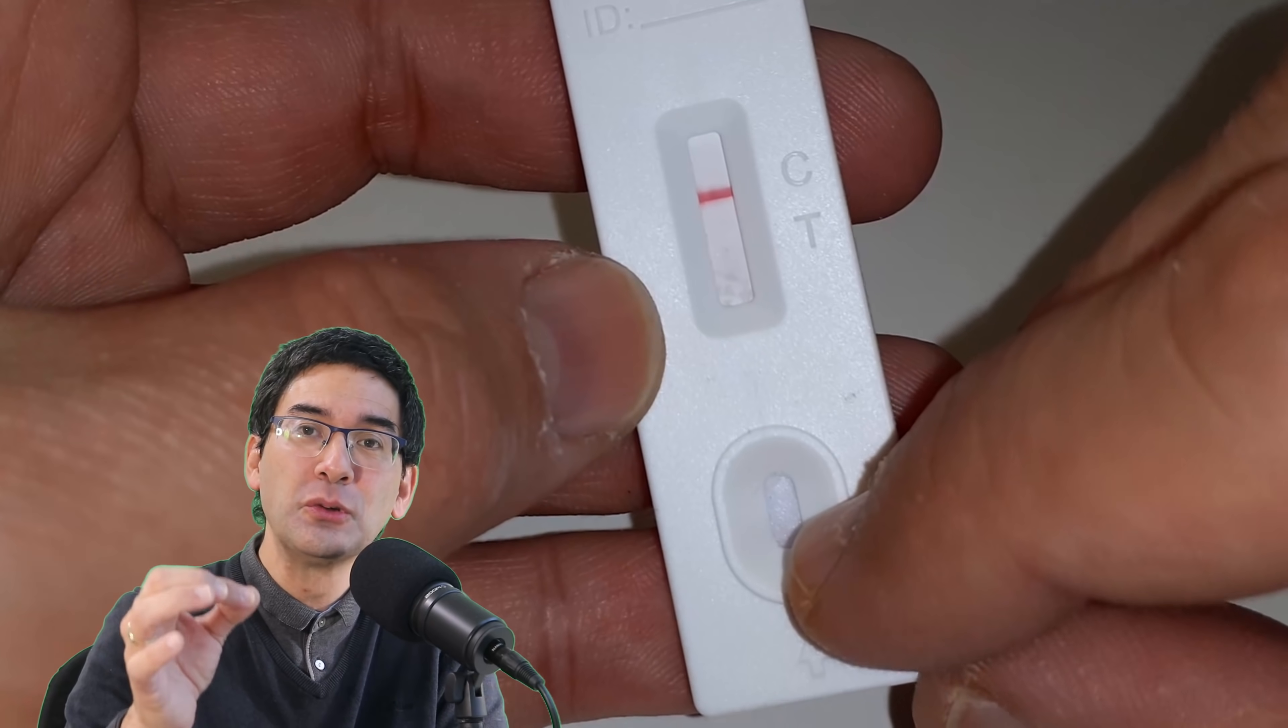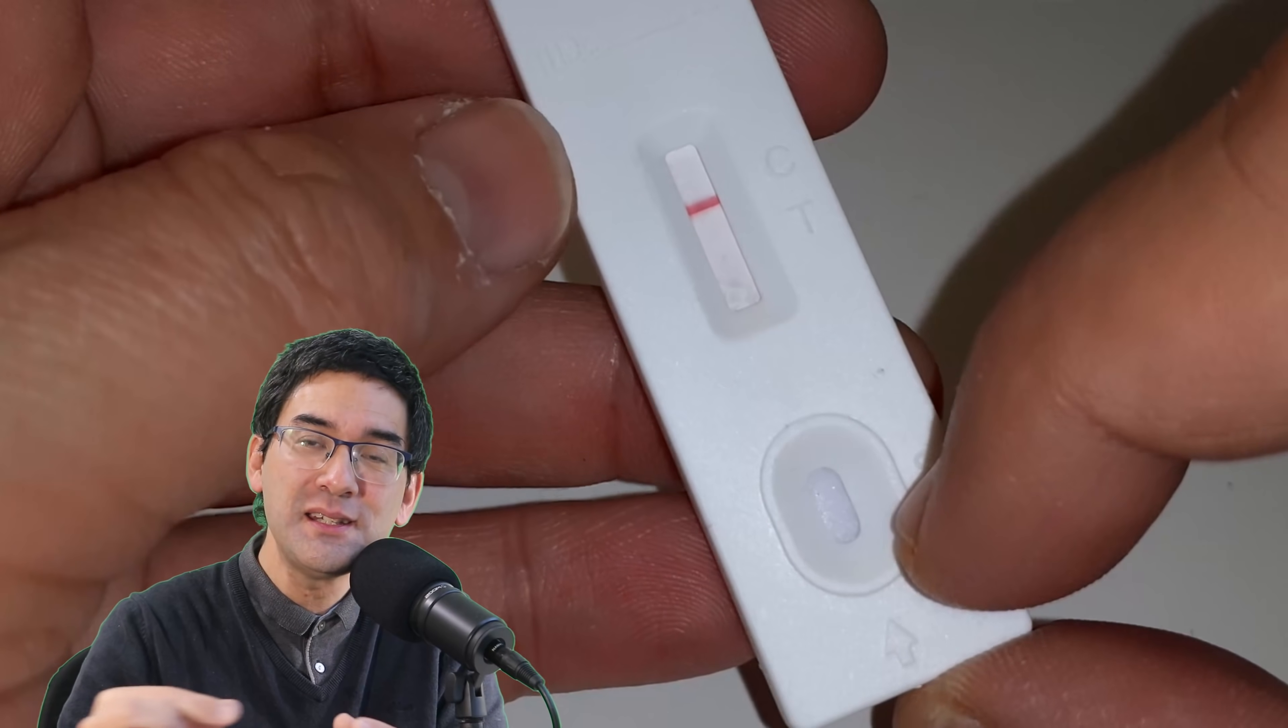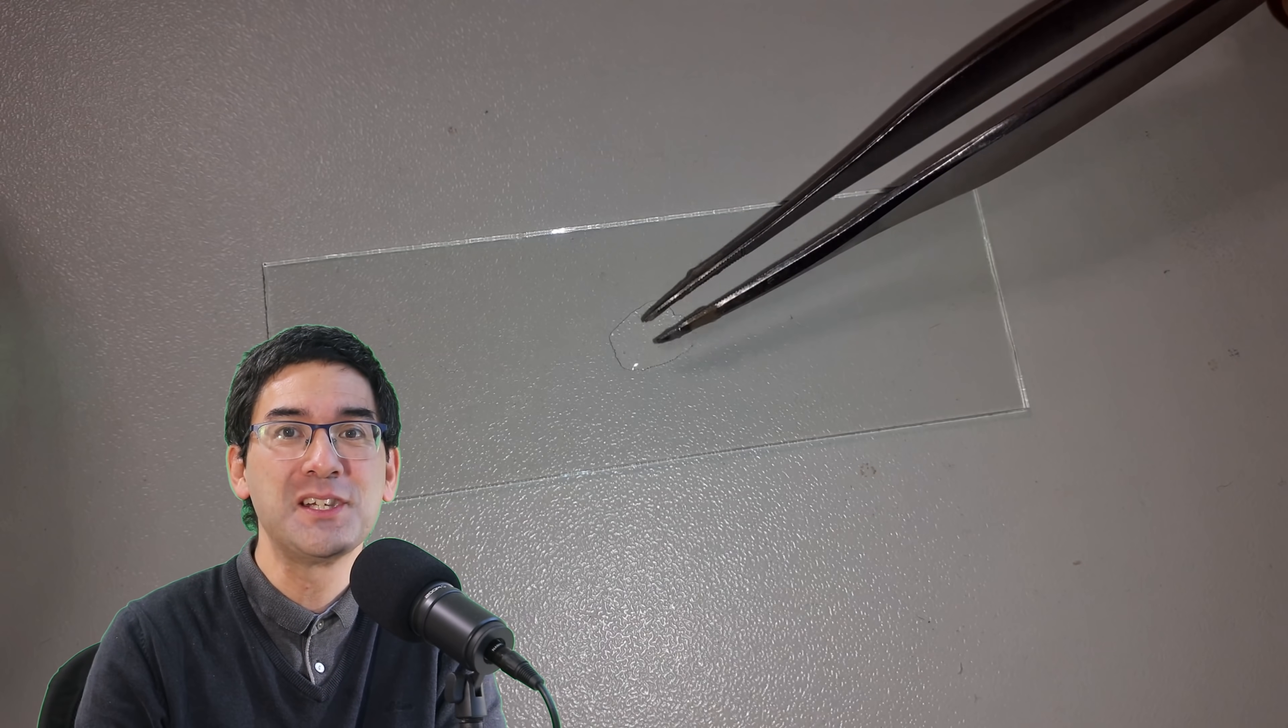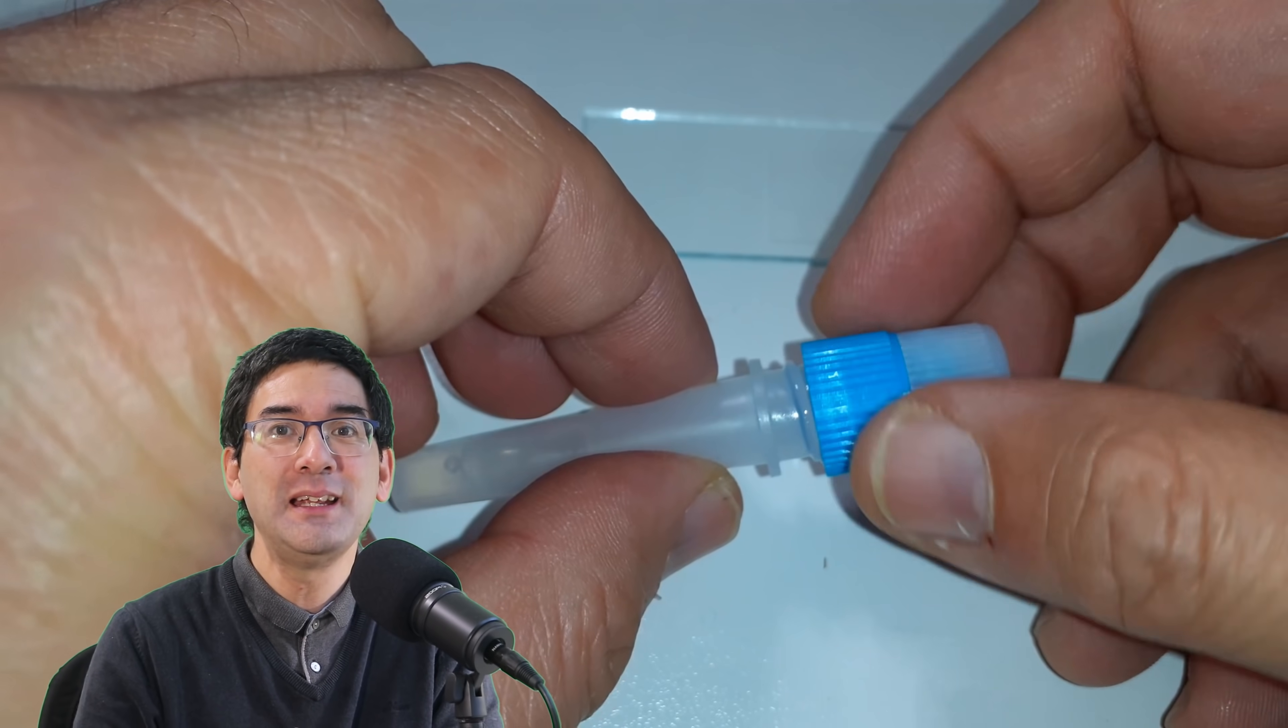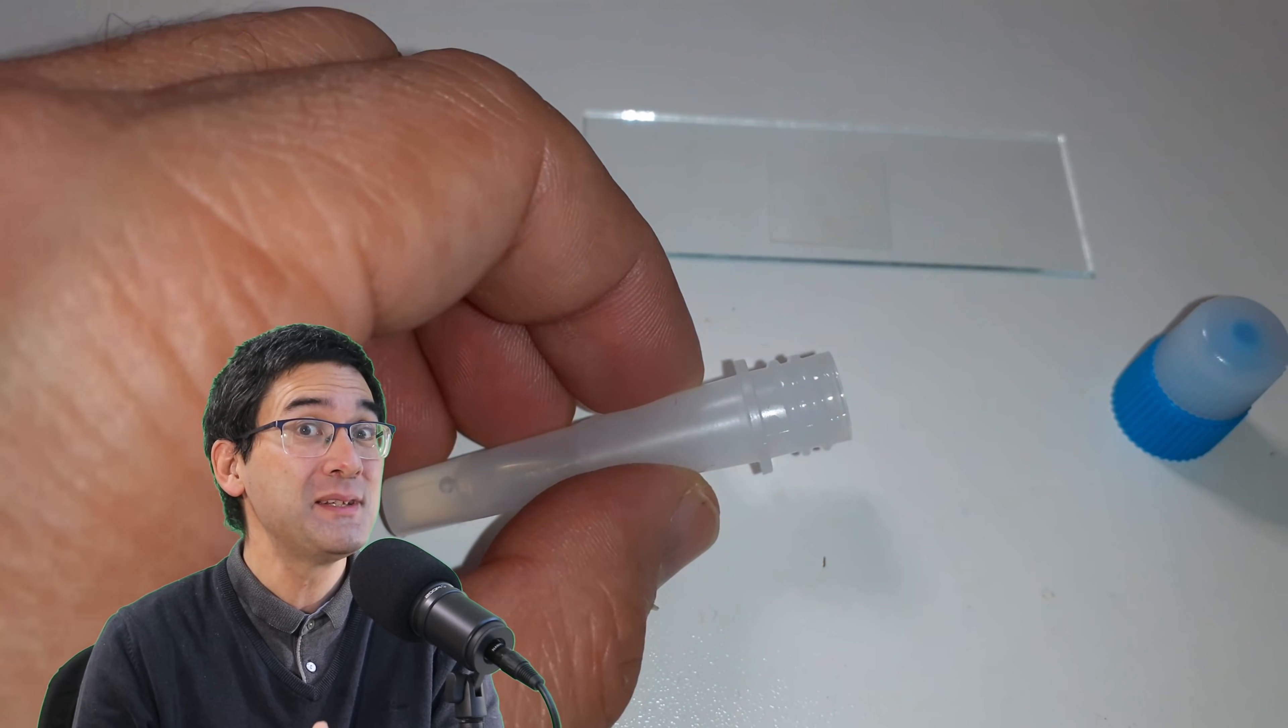When you put the solution on the test strip, the corona test strip, then you have an antigen reaction if the virus is present. What I've done is taken some of the solution and mixed it with a water sample containing water microorganisms, and I wanted to see what actually happens.